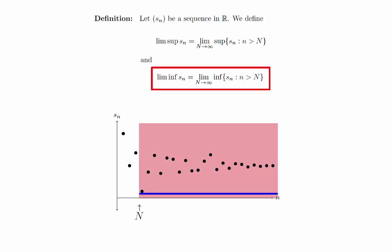The lim inf is the same idea, but we are looking at the lowest point that is always in front of you. In class, we will see that these limits exist and use them to prove that Cauchy sequences and convergent sequences are the same thing.